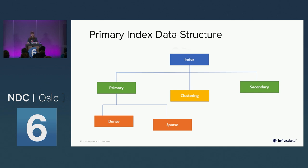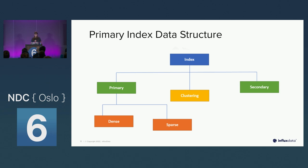A secondary index is normally created by you — for example, saying the two most important things to query are customer IDs and the last time they logged in. One thing to note is that when you do a data modification or table modification, secondary indexes normally have to be updated, impacting write performance. Some databases do not offer secondary indexing for that reason. The big reason to have these different structures is mainly to strike a balance between read and write performance.